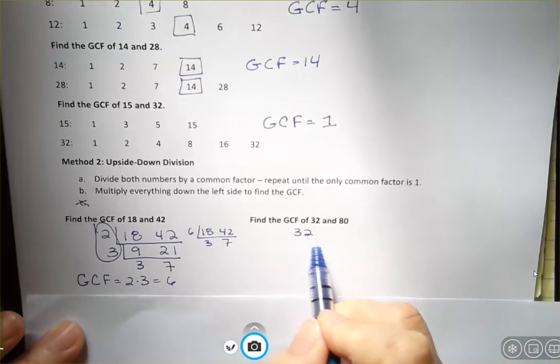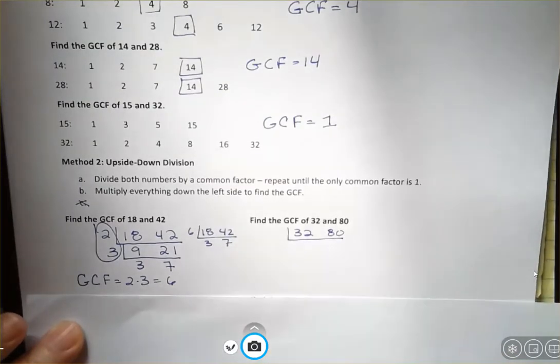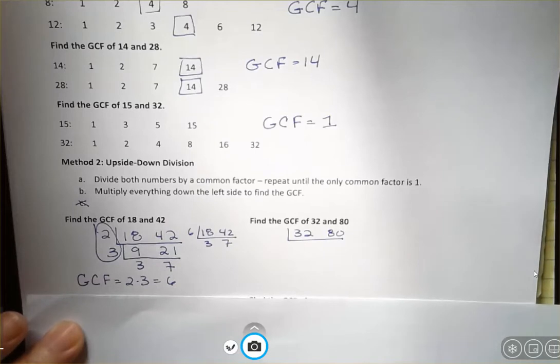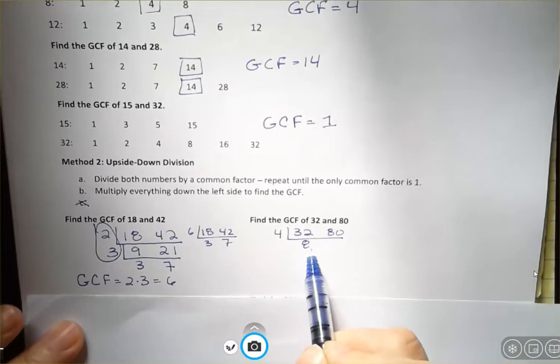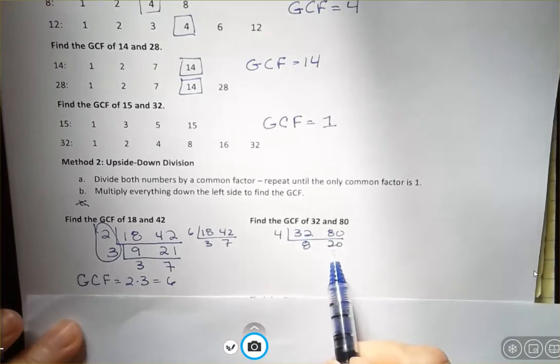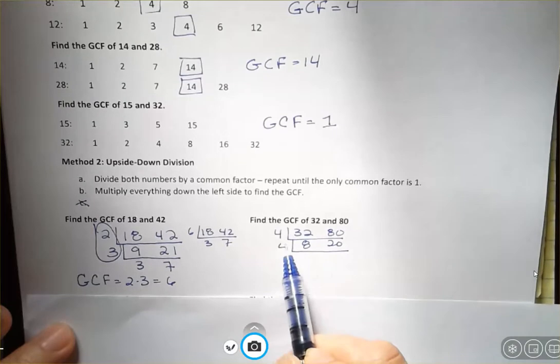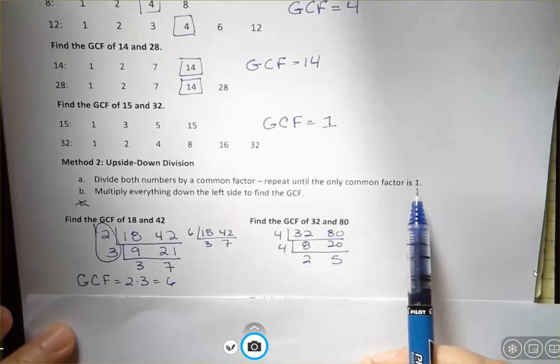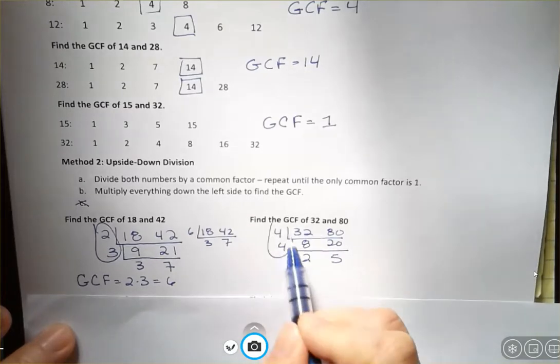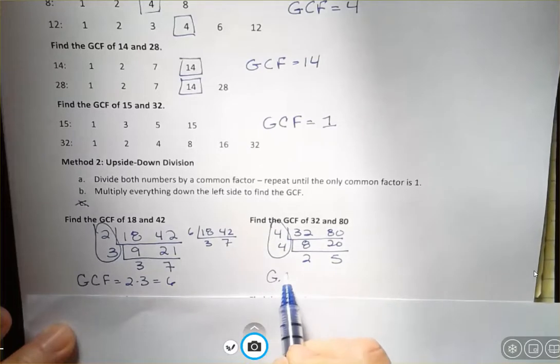So let's look at this one, 32 and 80. What goes into both of these numbers? You could start with two, or four, or eight, whatever you see. Don't feel like you have to start with the greatest common factor, you just have to start with some common factor. So let's say that I saw four. And then I would say that's eight and that's 20. And then I would say, wait a minute, eight and 20 have something in common, they have another four in common. Four goes into eight twice, four goes into 20 five times, and two and five only have a common factor of one. So I'm done. And I'm going to multiply everything on the left side to get my greatest common factor. And my greatest common factor then is 16.